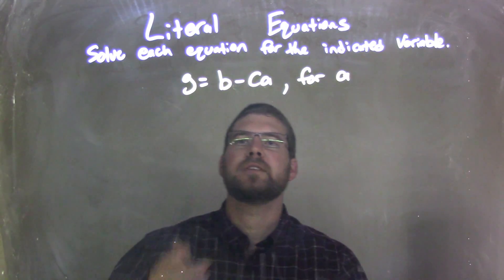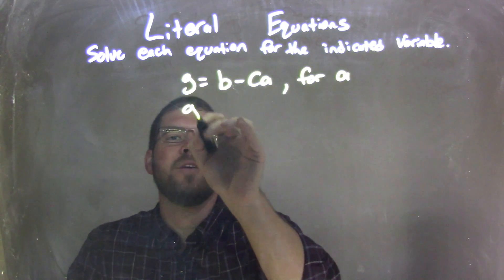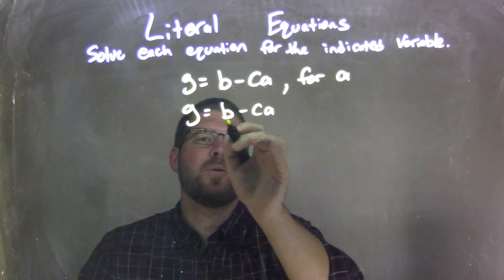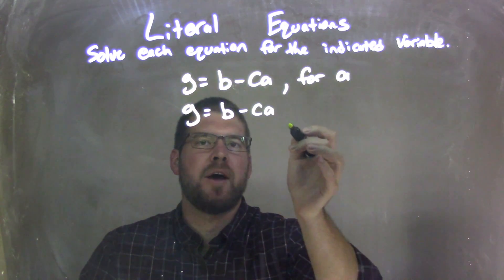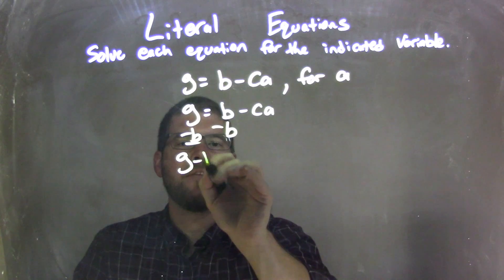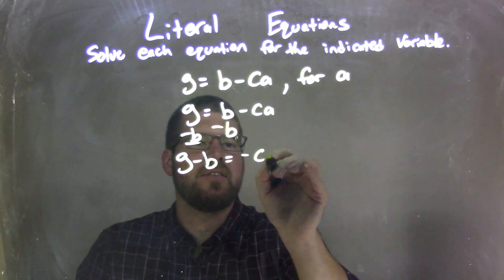I'm going to rewrite it. I always do that. Rewrite our equation, G equals B minus CA, and I know I'm solving for A. I want to subtract B from both sides. That leaves me with G minus B on the left equals negative CA on the right.